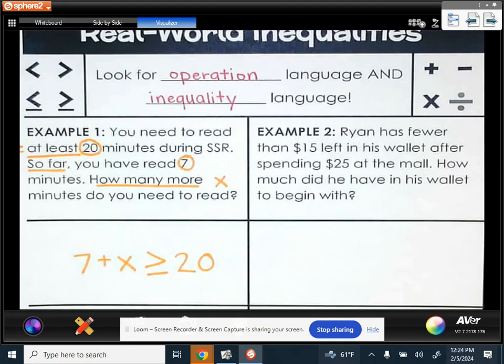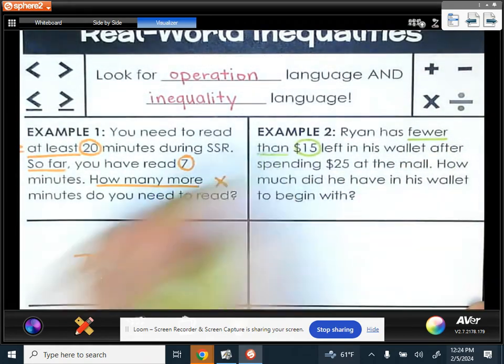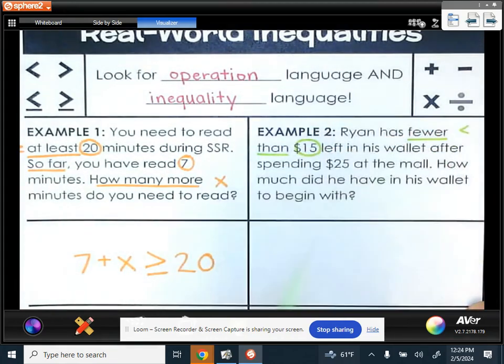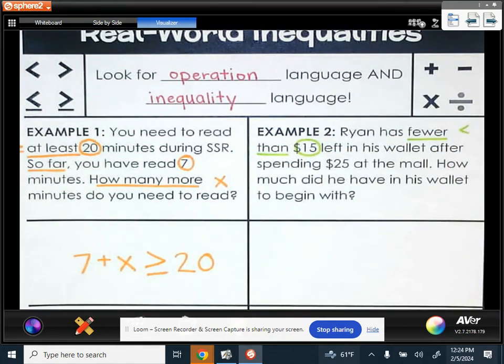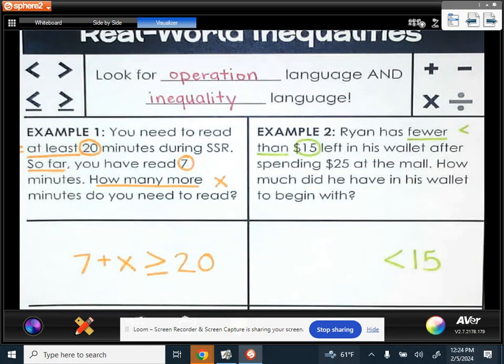Example two says Ryan has fewer than $15 left in his wallet. So fewer than is the same thing as less than. So we know we're going to be using the less than symbol, and it says less than 15. So it's going to say less than 15.